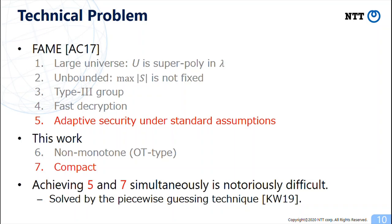However, we encounter a problem to achieve these properties simultaneously. Recently, Kowalczyk and Wee solved the notoriously difficult problem of how to achieve compactness and adaptive security under standard assumptions, which was presented in Eurocrypt 19.